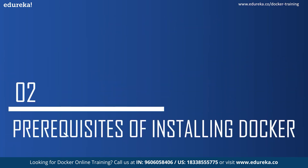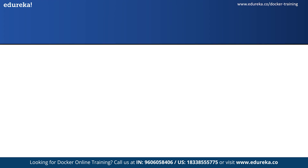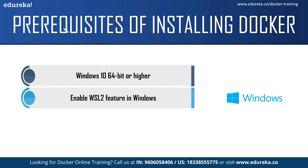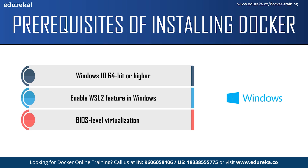Next we have the prerequisites of installing Docker. For Windows users, the first prerequisite is Windows 10 64-bit or Windows 11. The second is enabling the Windows Subsystem for Linux feature. The third is that BIOS-level virtualization must be enabled, and finally you should have at least 4GB RAM in your system.